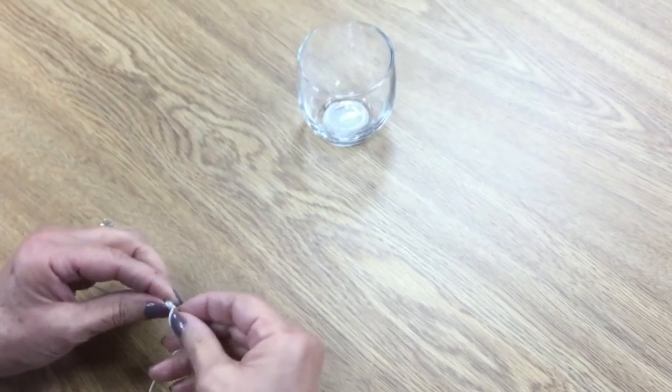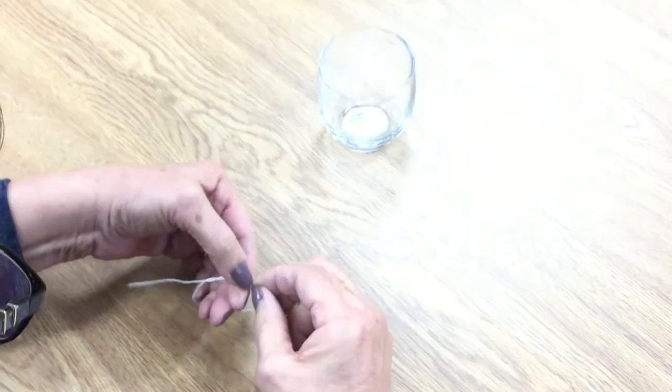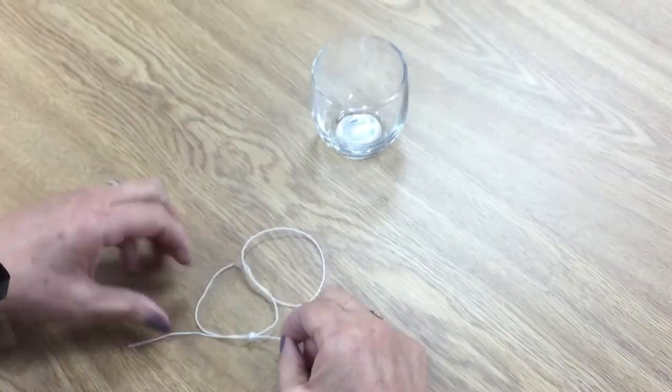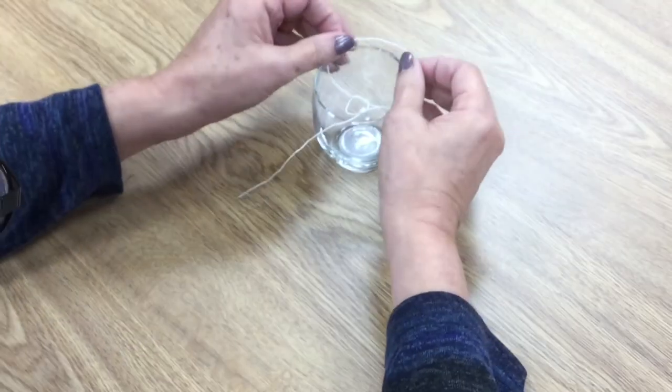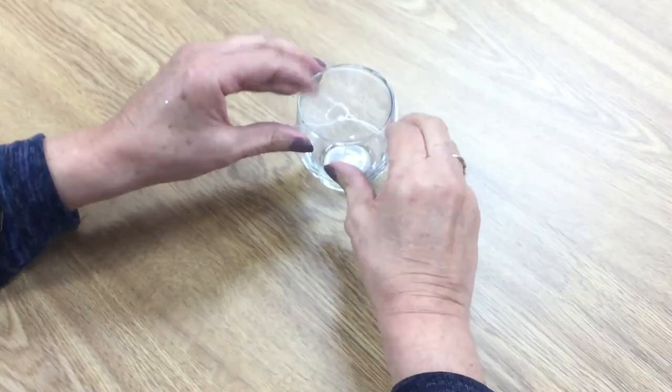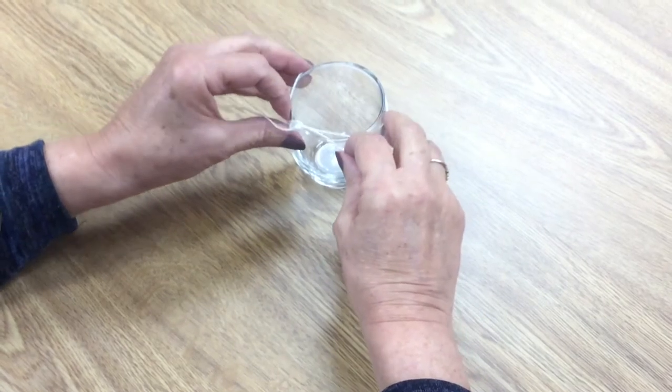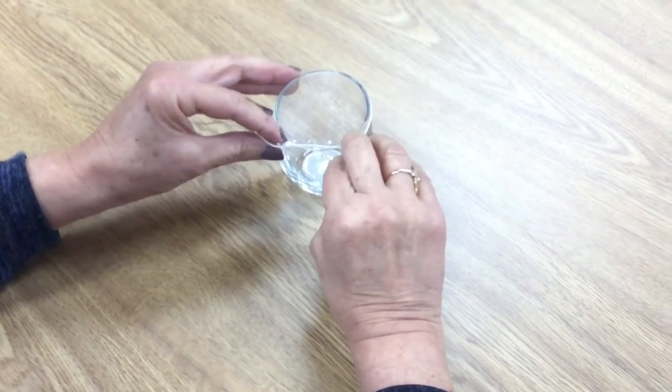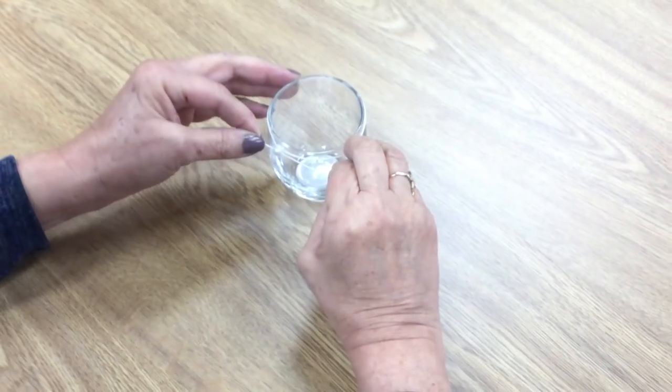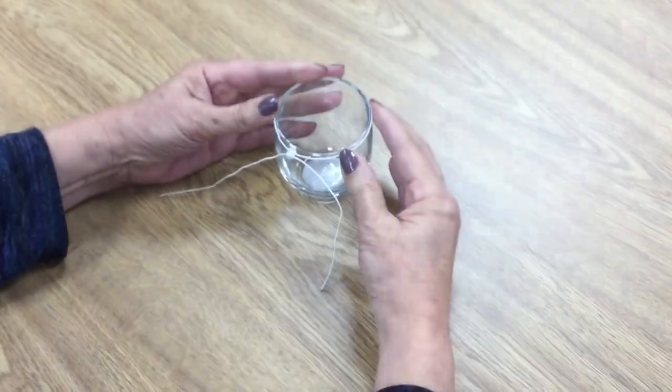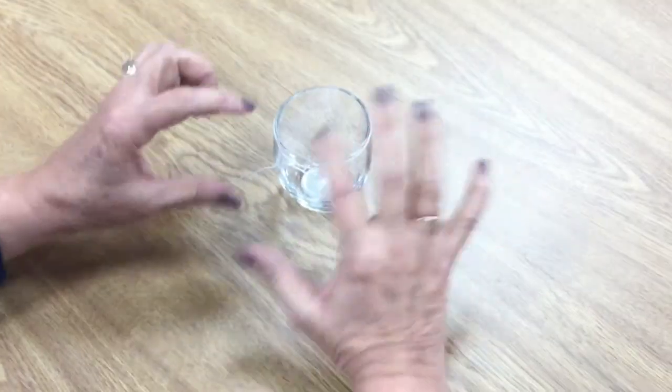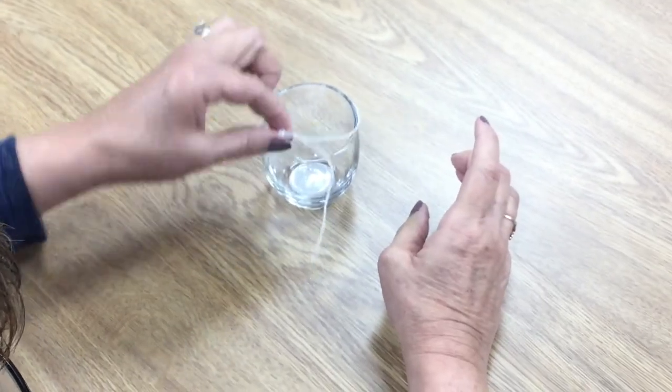You're going to feed it through and it should go with a thread already in there. Pull that through like that, then pop this on here. We're getting this ready because it's hard to put this on once all the glitter is on it. Pull that tight and you can see how that locks in place.